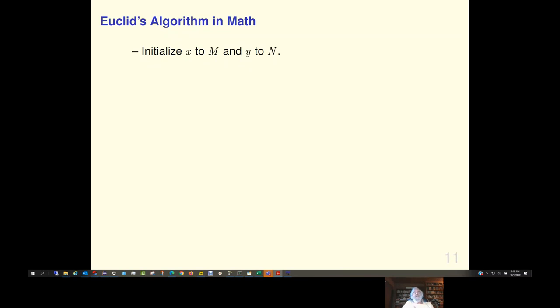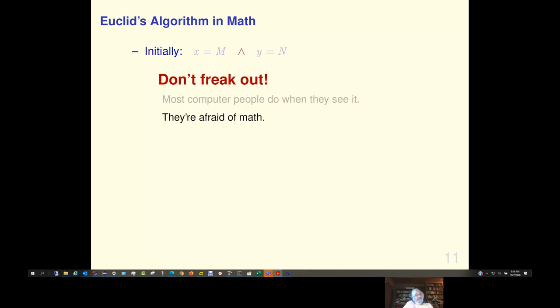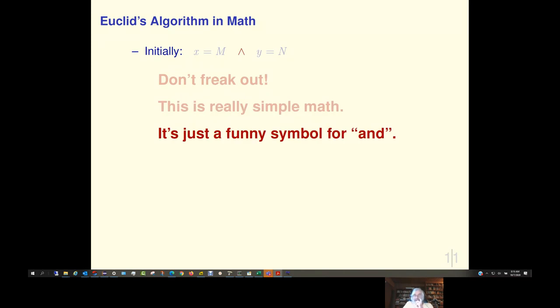Start with initialization. Initially, x equals m and y equals n. Well, that looks like math. Except that 'and' is English, not math. Well, mathematicians have a way of writing 'and' in math. They use this symbol. Now, do not freak out. Most computer people do when they see this funny symbol. They're afraid of math. Believe me, they are. But this is Microsoft. We don't let a little math stop us, do we? This is really simple math. And this is just a funny symbol for 'and'. Just get used to it.